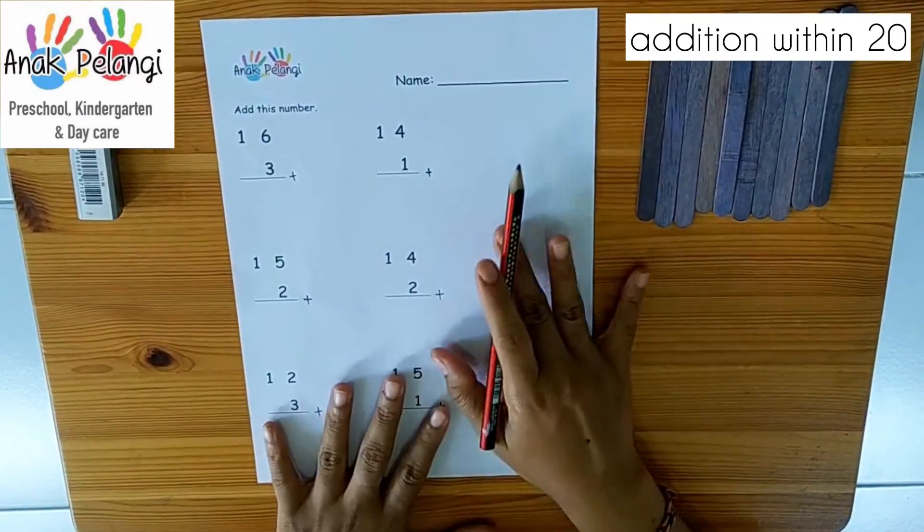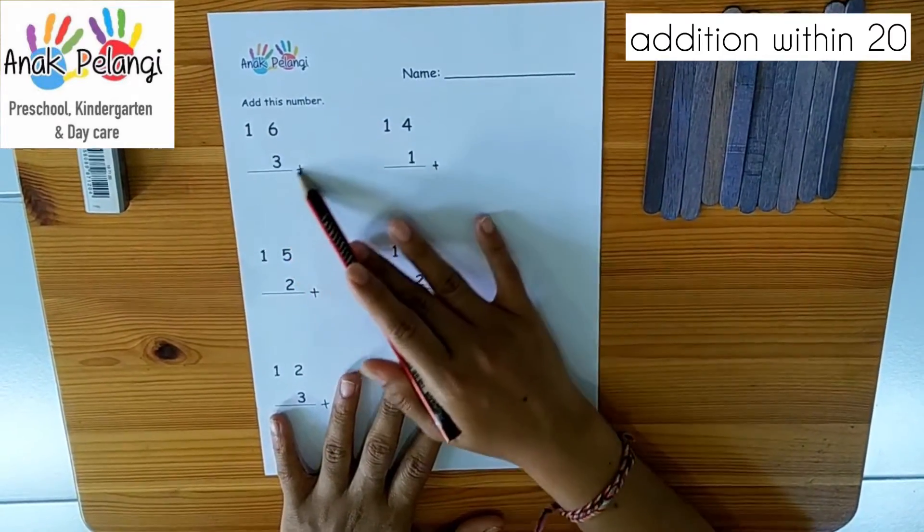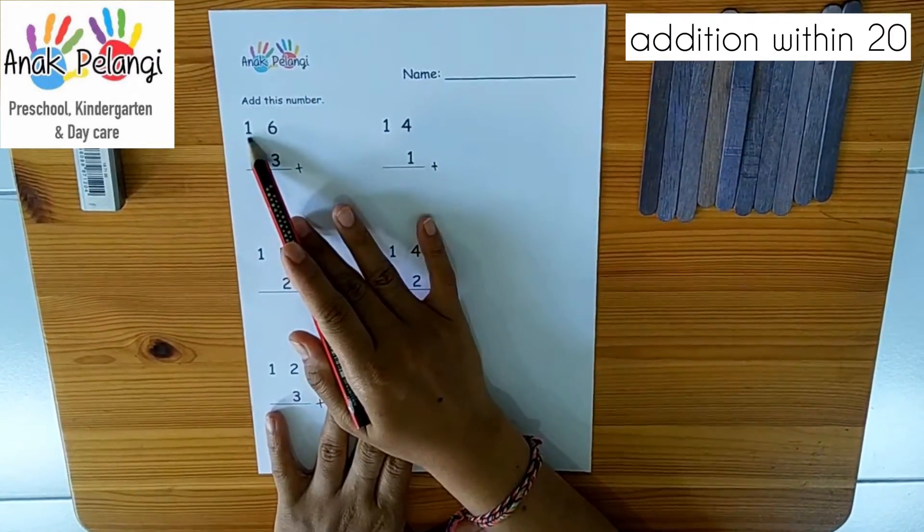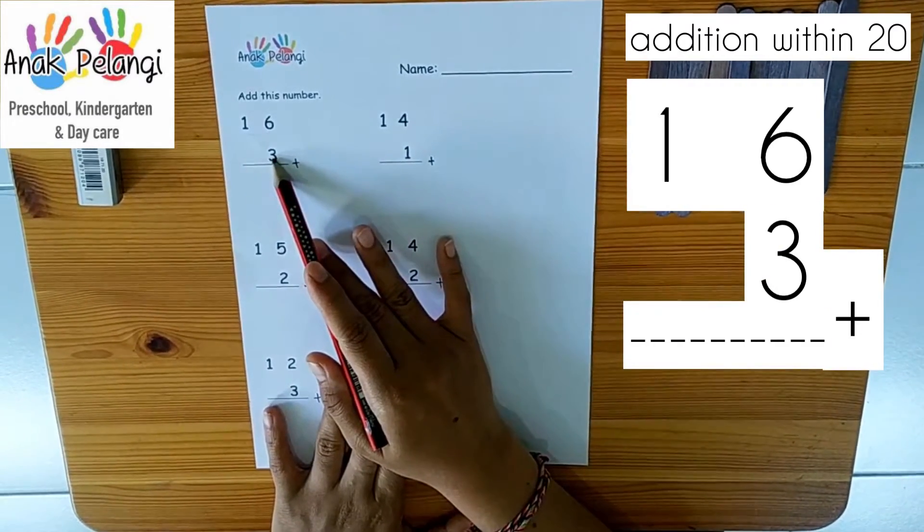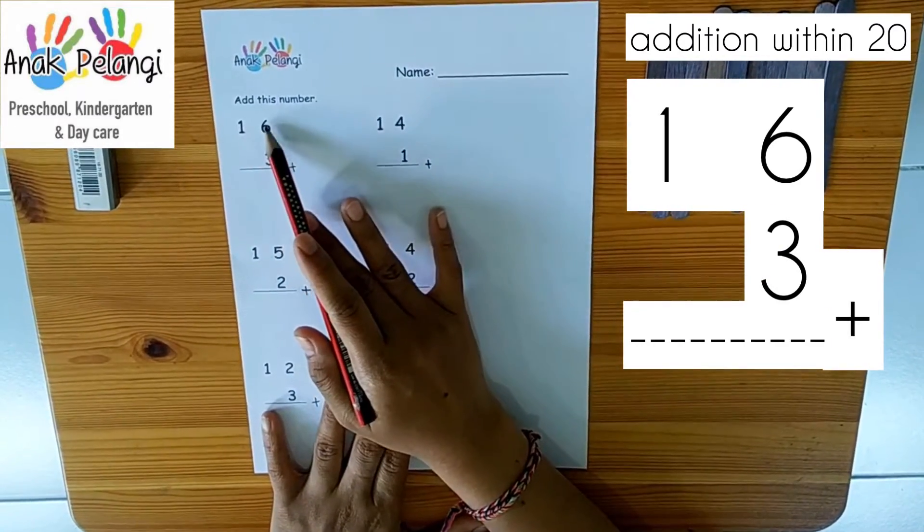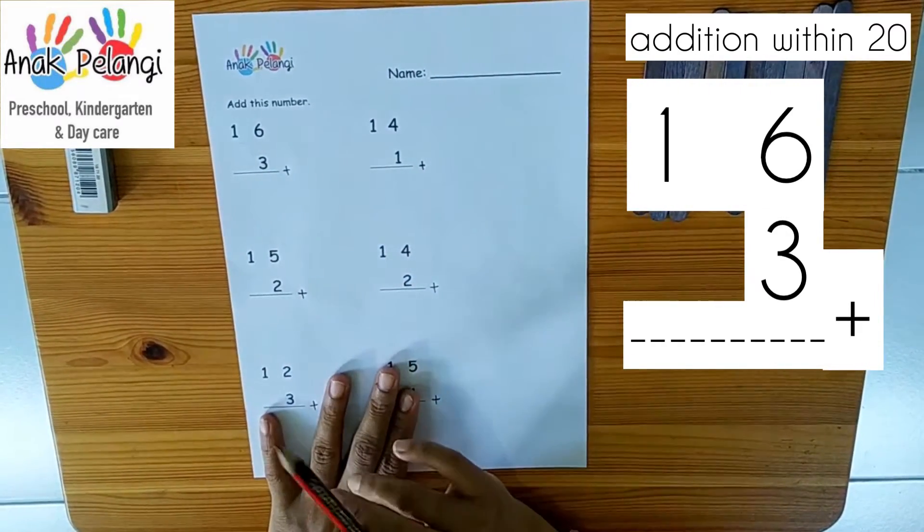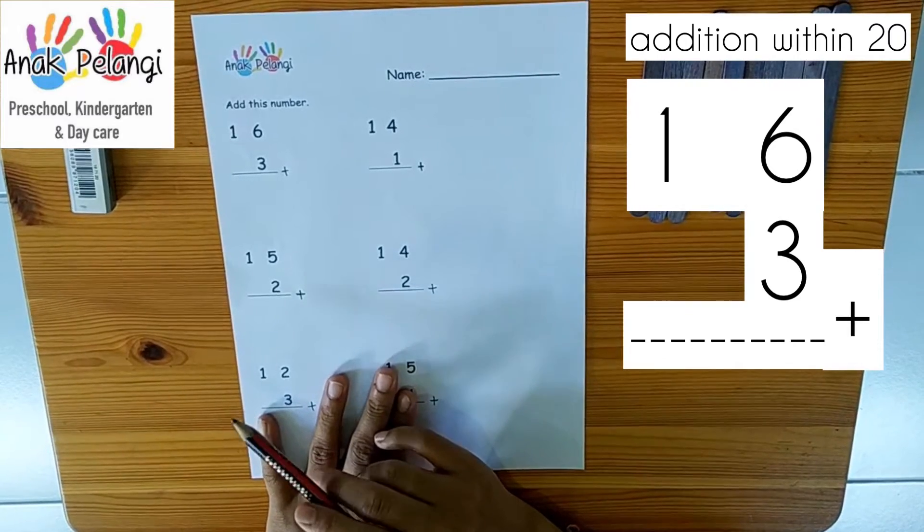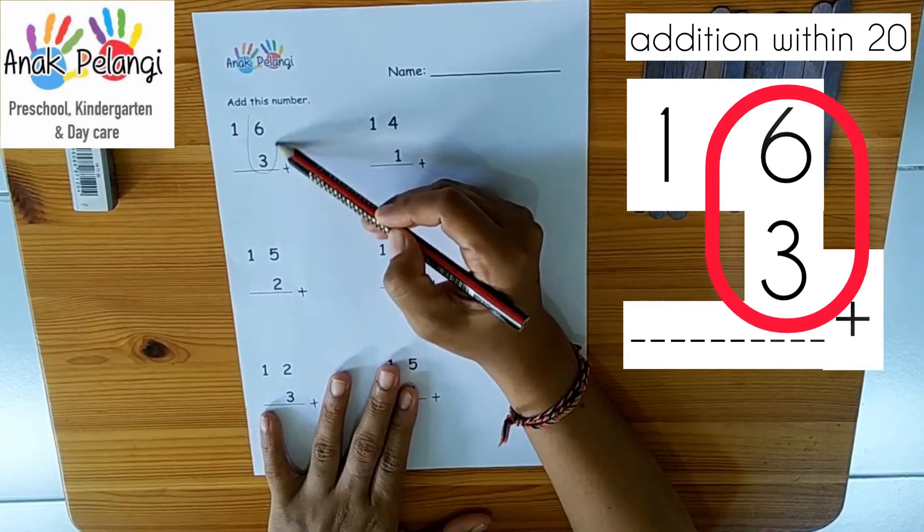Add these numbers. Let's start to do this addition here. 16 plus 3. Remember to start adding the numbers in the ones position first.